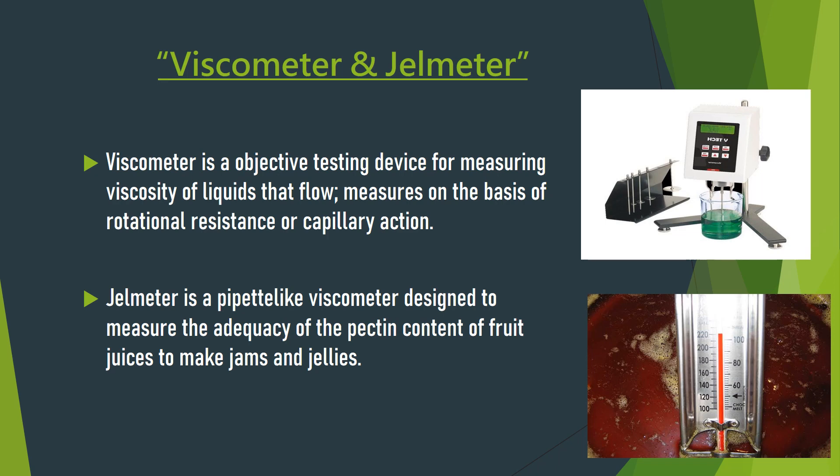The viscometer is an objective testing device for measuring the viscosity of liquids that flow, measured on the basis of rotational resistance or capillary action. The gel meter is a puppet-like viscometer designed to measure the adequacy of the pectin content of fruit juices to make jams and jellies.